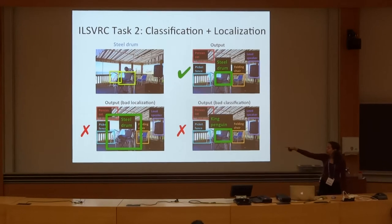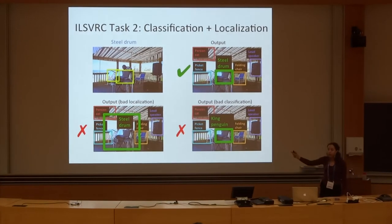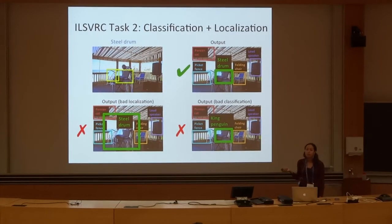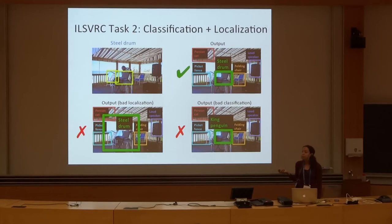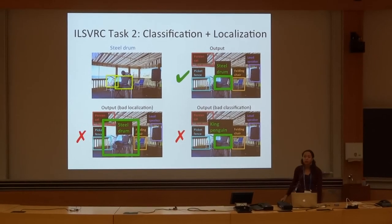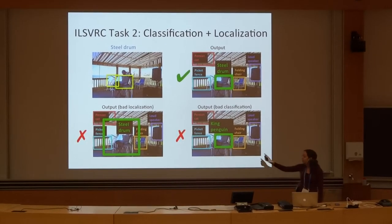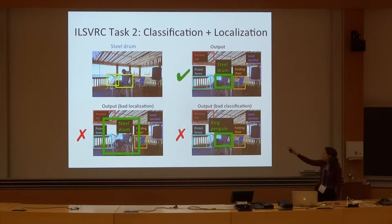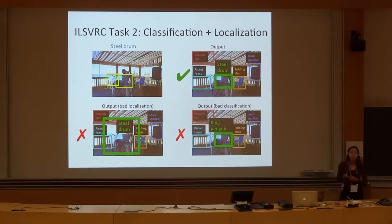However, if the algorithm gets the fact that there's a 'field drunk' in the image correctly, but does not properly localize any one instance, then that is incorrect. And if it fails to realize that there is a 'field drunk' in the image, then that is also incorrect.